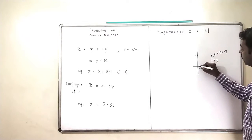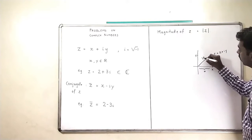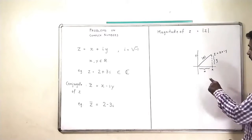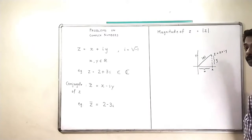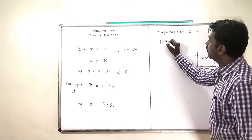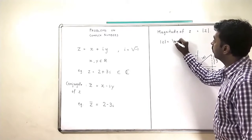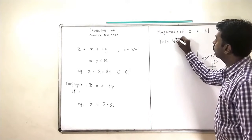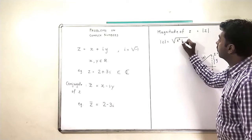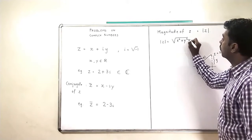And this length is called the magnitude of Z, which by Pythagoras, we will get as the magnitude of Z equals square root of X squared plus Y squared.